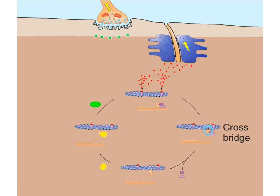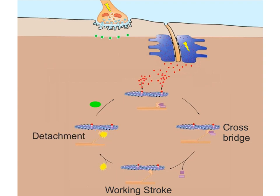This binding is called a crossbridge. Next, ADP and phosphate pop off the myosin head, changing its configuration from upright to bent — this is the working stroke. After the working stroke, an ATP molecule from a mitochondria attaches to the myosin head, causing it to detach from the active binding site of G-actin — called detachment. Finally, ATP is broken down into ADP and phosphate through ATP hydrolysis, reconfiguring the myosin head from bent to upright so that another crossbridge can be performed. Once the myosin head has returned to an upright position, a new crossbridge can be performed and the muscle contraction will continue.